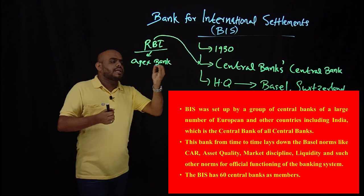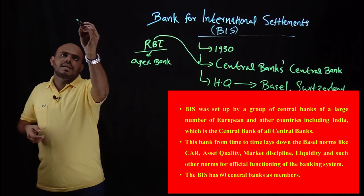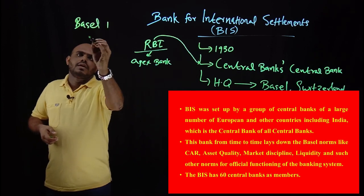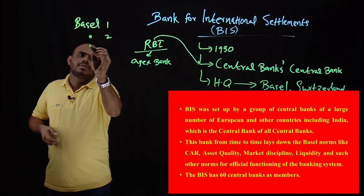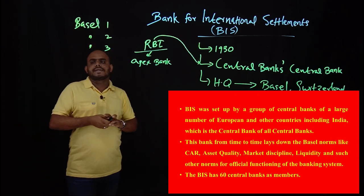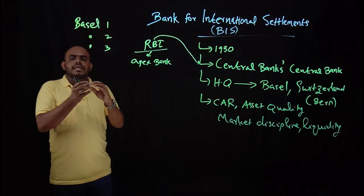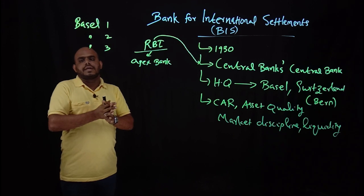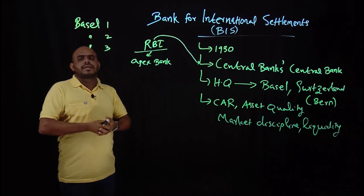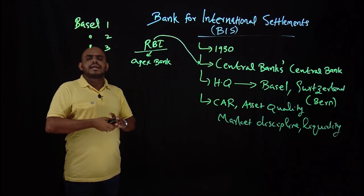That is the capital adequacy ratio. We will discuss Basel 1, then Basel 2, then Basel 3 — the latest one is Basel 3 — in the coming topics. We will also discuss banking efficiency and banking crises in those sessions.